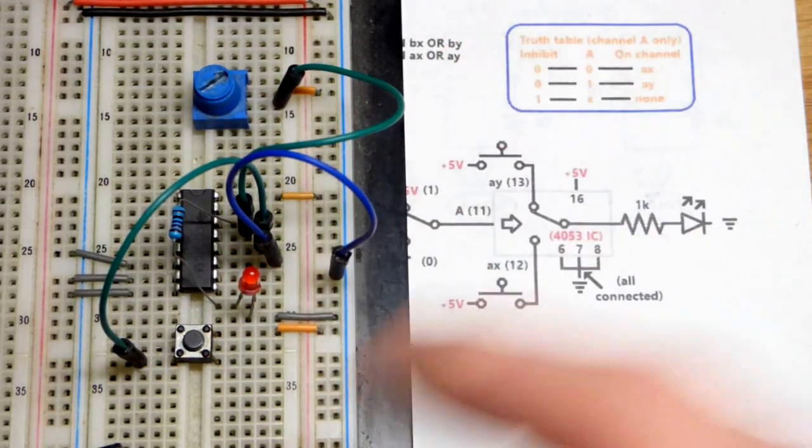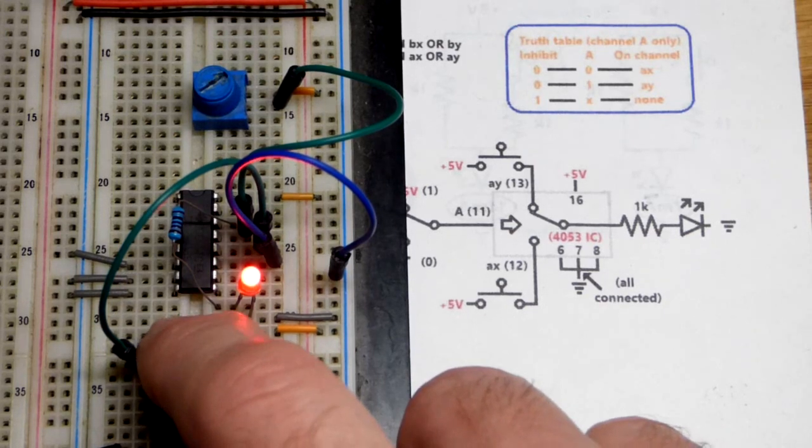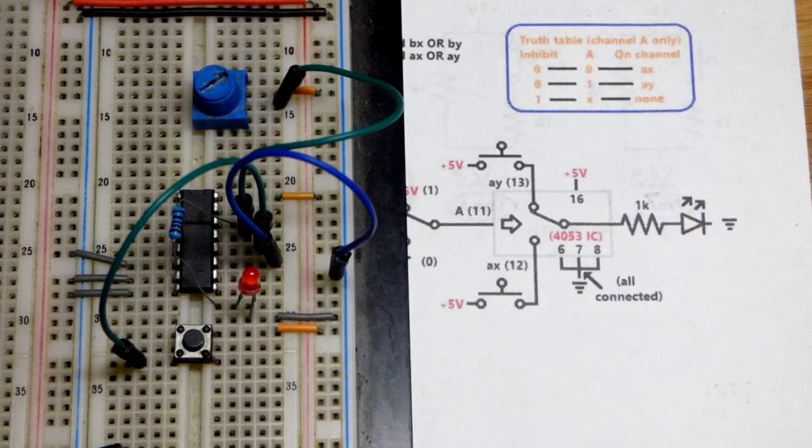And now we'll just demonstrate a digital signal. All I can do is either give it high or low, on or off. And you could transmit signals that way.